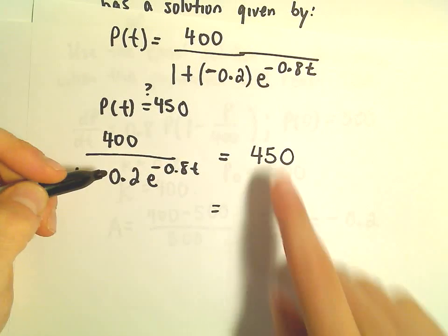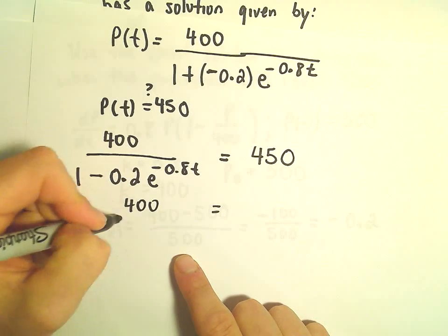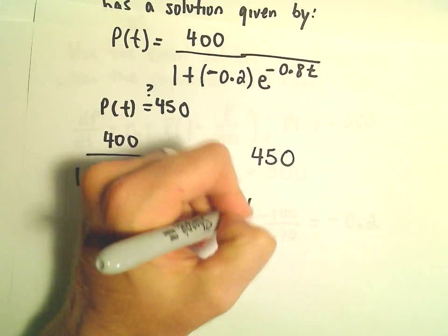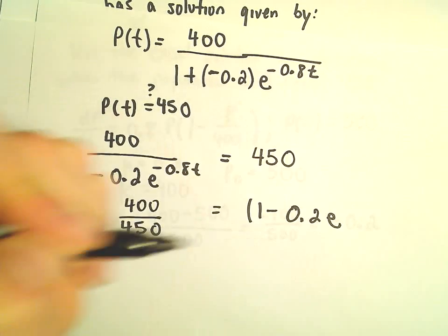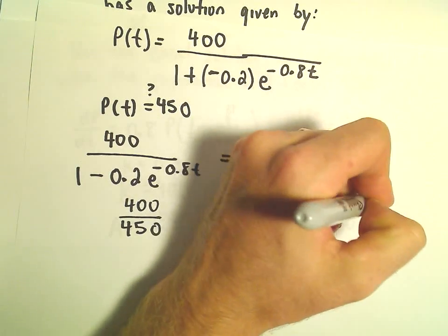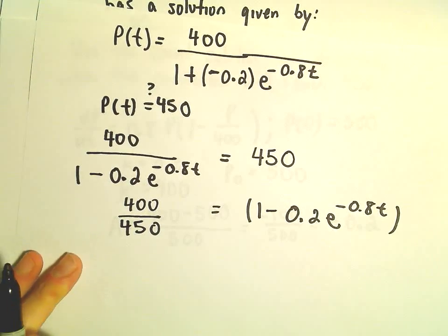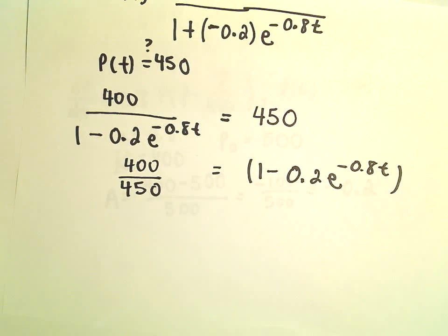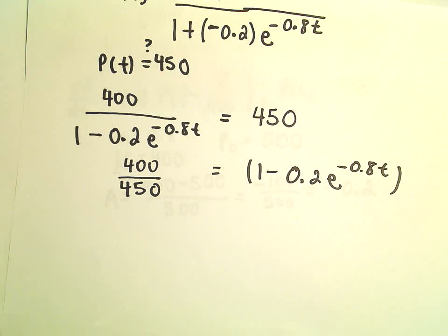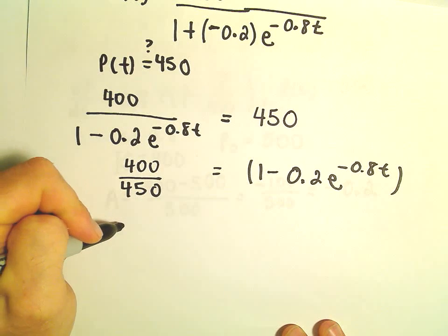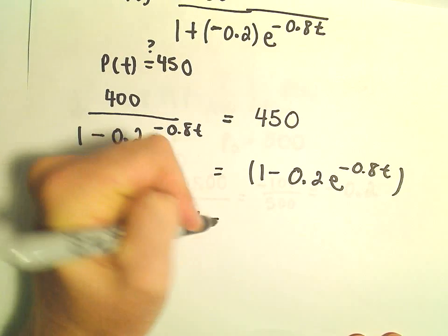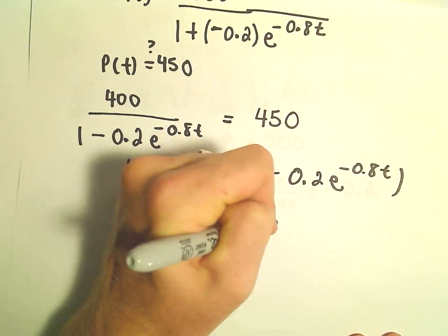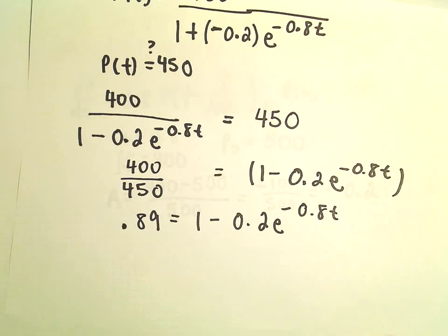So I'm going to divide the 450, and then I'm going to multiply by the 1 minus 0.2 e to the negative 0.8 times t. All right, 400 over 450, I'm going to round this off. This is roughly going to be equal to 0.89. So that's 1 minus 0.2 e to the negative 0.8t.